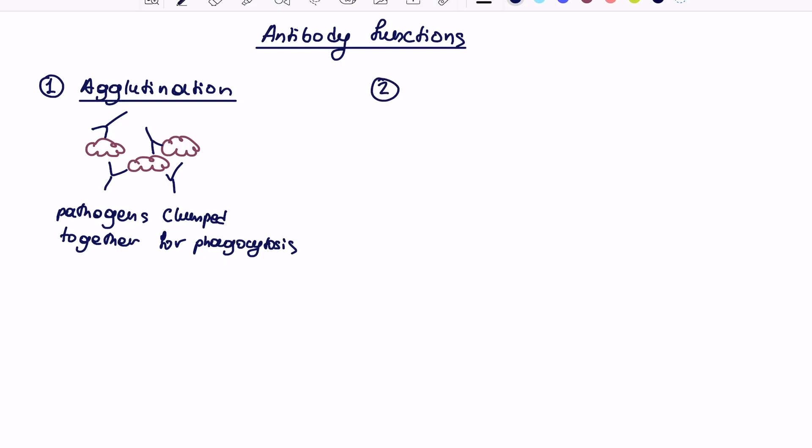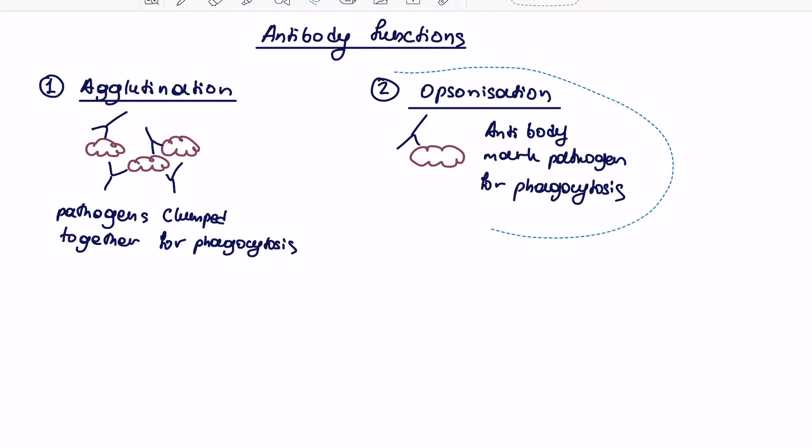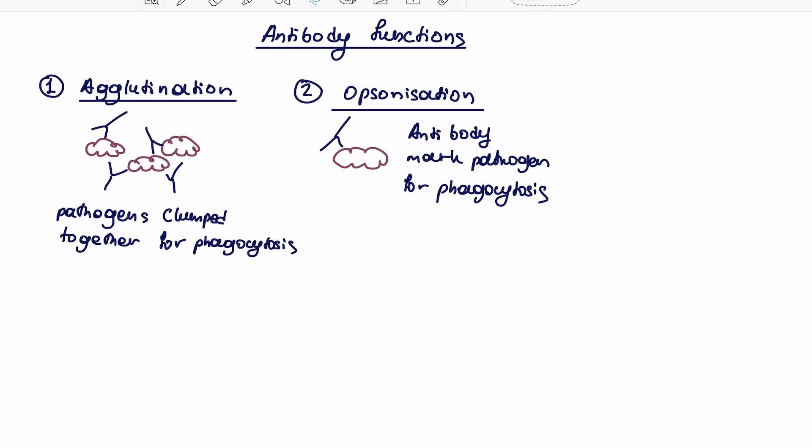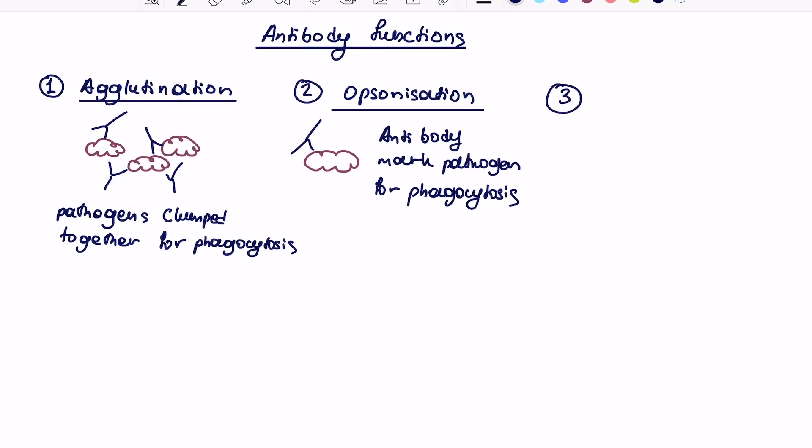The second function of antibodies is linked to agglutination. They have a different name called opsonization. Opsonization means that rather than kind of clumping the pathogens and antigens together, the antibody will just mark a particular pathogen, again for phagocytes, so it will create a signal for phagocytes to come and clear out the marked pathogen. So to be honest with you guys, opsonization and agglutination, they're quite linked together, but these two processes have two different names, so just know which one which means what.